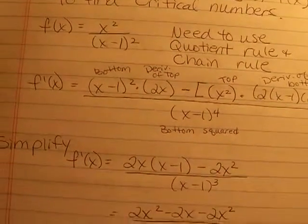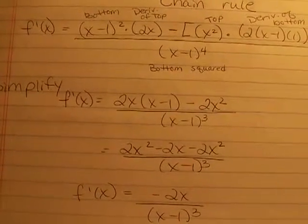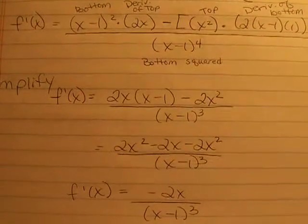So when we simplify that, a couple steps there, we're going to end up with negative 2x over x minus 1 to the third.